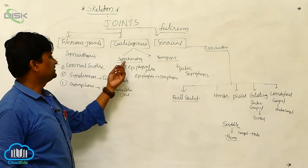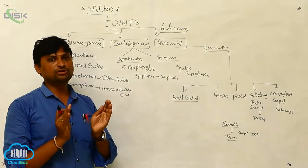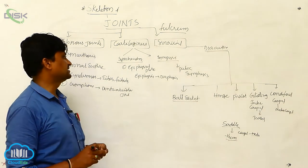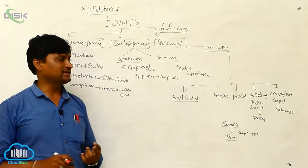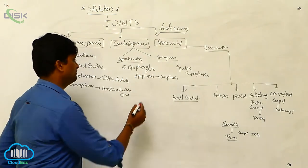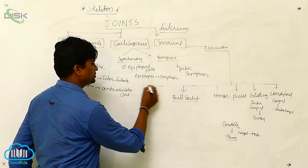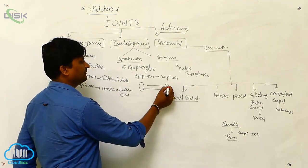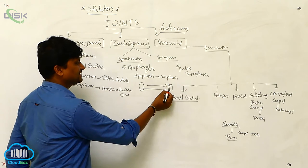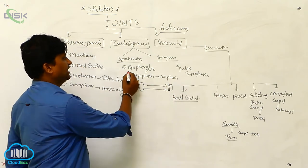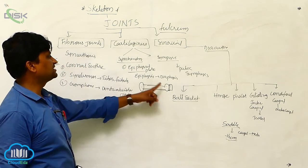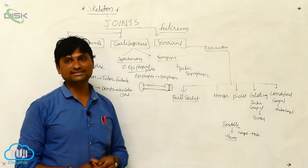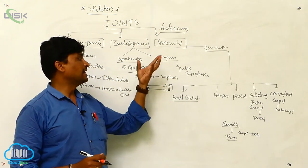Next is the cartilaginous joint. Cartilaginous joints include synchondrosis and symphysis. Synchondrosis allows simple, moderate movement. An example is the epiphyseal plate — a bone has a shaft (diaphysis), and at the end there is the epiphyseal plate, where an additional bone section is added. This type of joint is made up of cartilage and is called a cartilaginous joint.